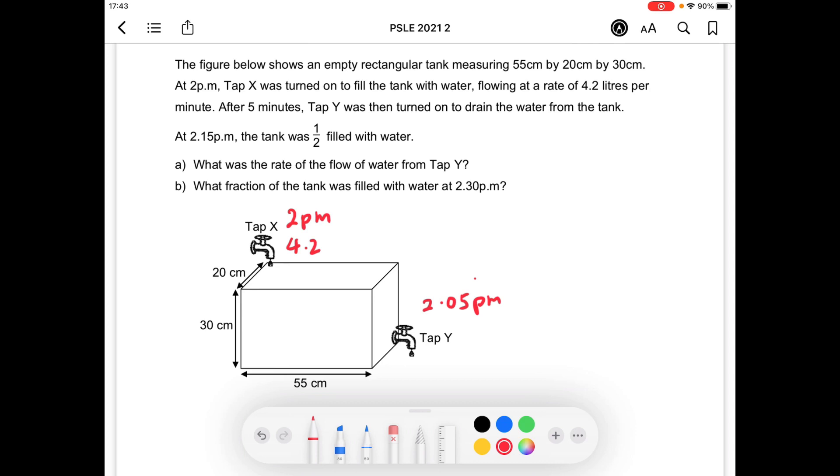At 2:15 p.m., the tank was half filled with water. So this is the volume of the water at 2:15 p.m. And water has been flowing into the tank from Tap X from 2 p.m. to 2:15 p.m.